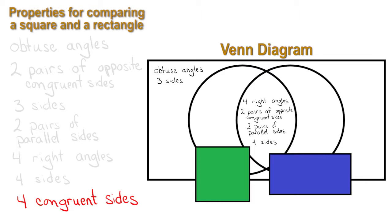The last one is four congruent sides. The square has this property, so four congruent sides will be written on the left side of the diagram and can be checked off the list.